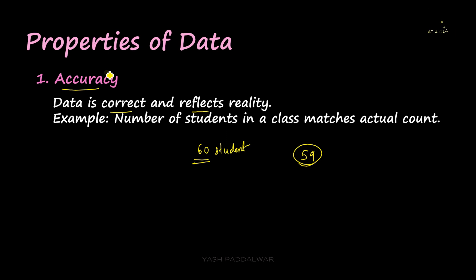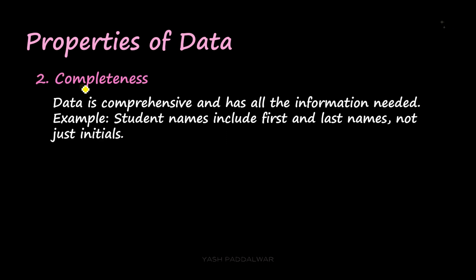The next property is completeness. Completeness property of data ensures that data is comprehensive as well as it has all the necessary information that is needed. Whenever we try to solve a particular problem, whatever data we have, we must ensure that the data is available fully. It has to be complete. For example, student names include first and last name, not just initials.